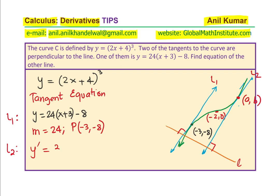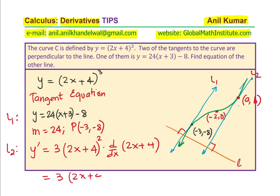y prime will be 3 times (2x + 4) squared times the derivative of the inside function. The derivative of (2x + 4) with respect to x is 2, so we get y prime equals 3 times (2x + 4) squared times 2, which simplifies. We know this gradient value is 24, so we set the derivative equal to 24. This will help us find the value of x, that is the value of a.